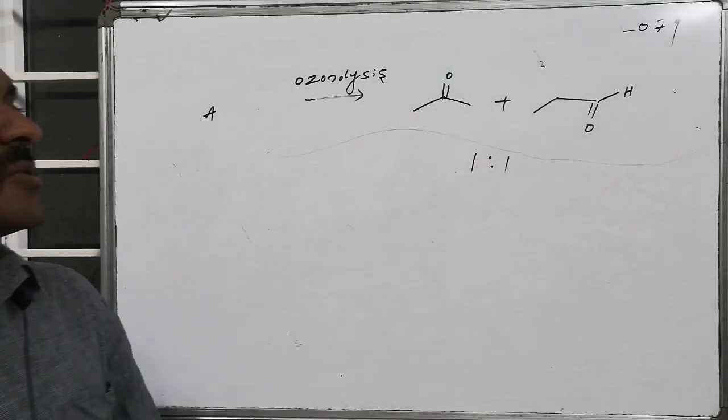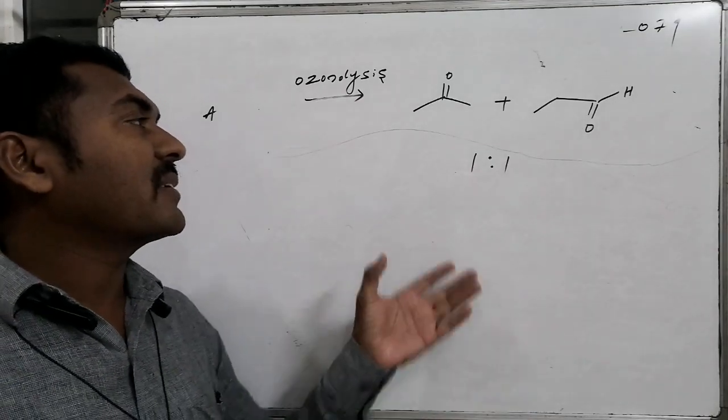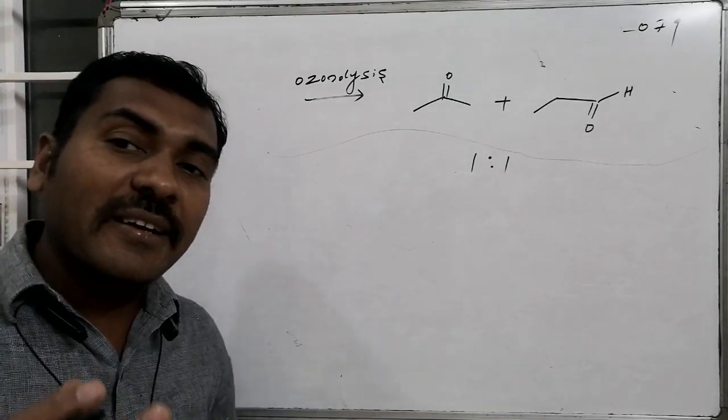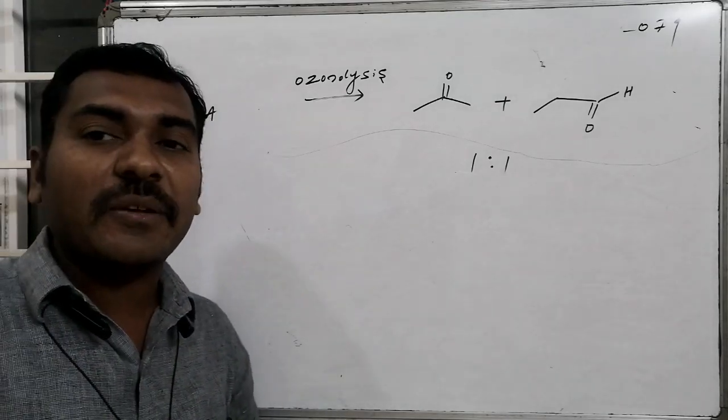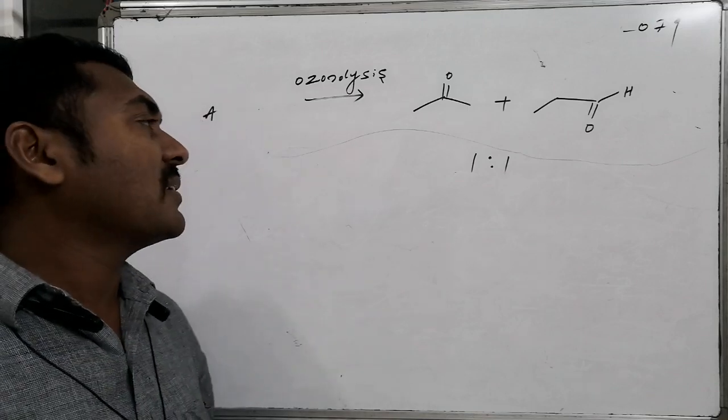An organic compound A on ozonolysis produces two carbonyls: one is a 3-carbon ketone, that is acetone, and another is a 3-carbon aldehyde, that is propanal. You are asked to write the starting material.